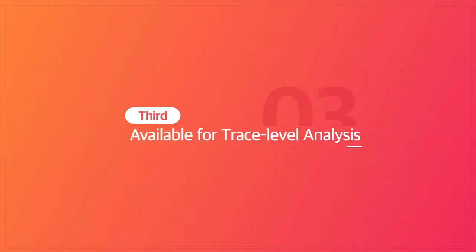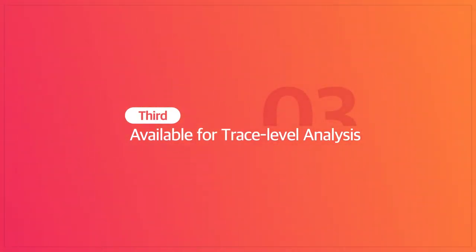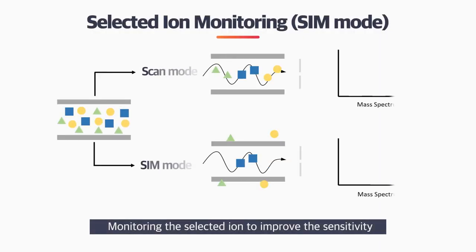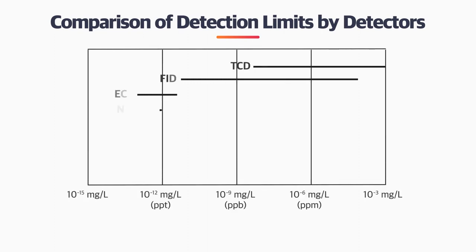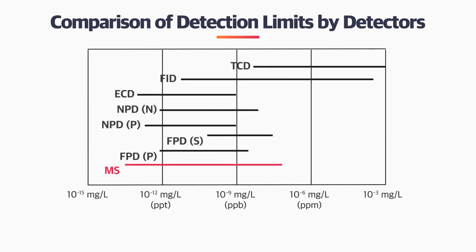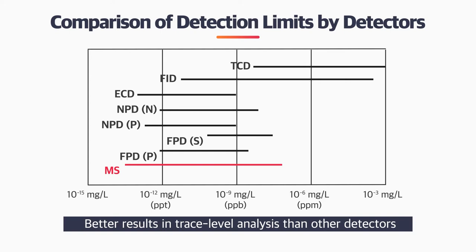Third, available for trace level analysis. By selected ion monitoring mode, which is SIM, GC-MS can monitor the specific selected ion to improve sensitivity. This delivers better results in trace level analysis than other detectors.